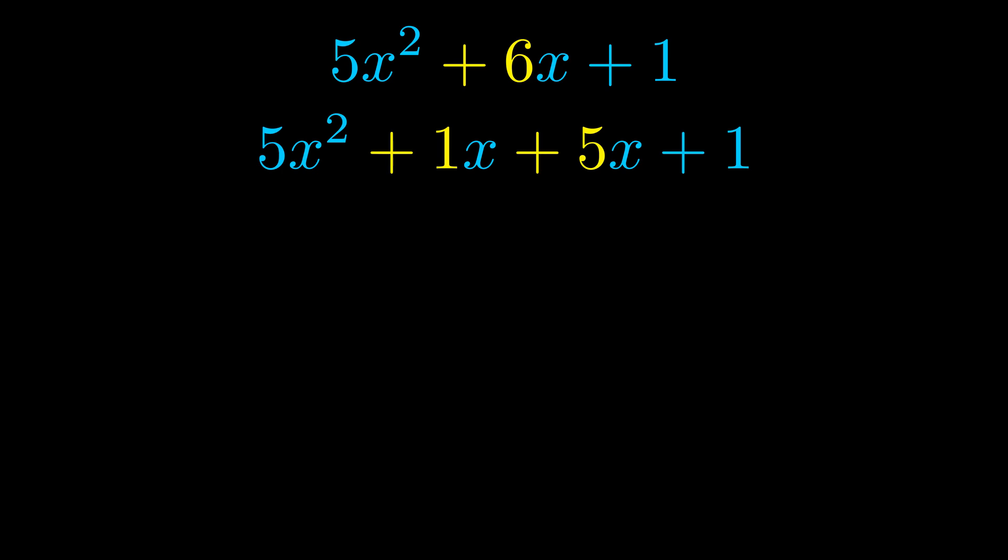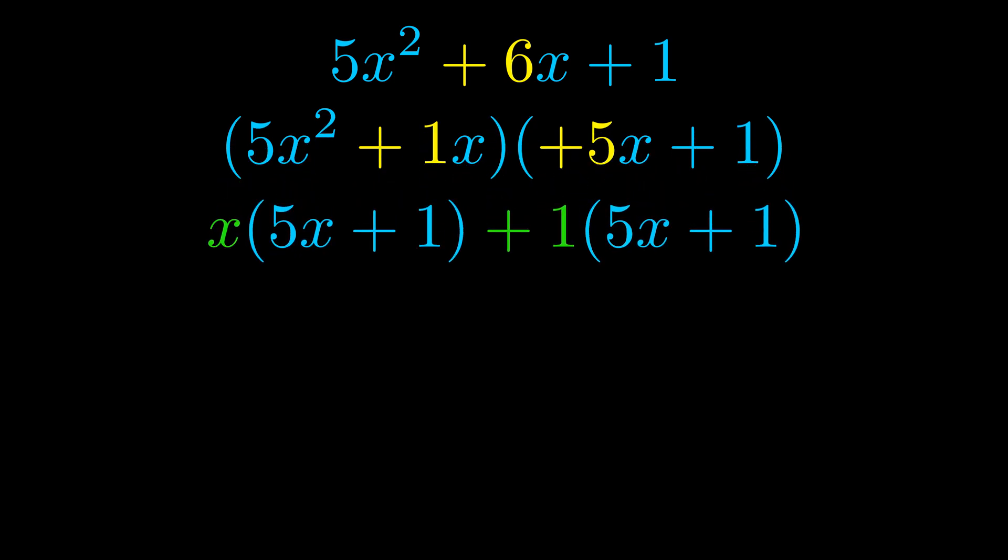Once we've done this we go ahead and we put parentheses around the first term and the last term and we do that so that we can take the greatest common factor out of both terms. We can see the greatest common factor is now outside in green.